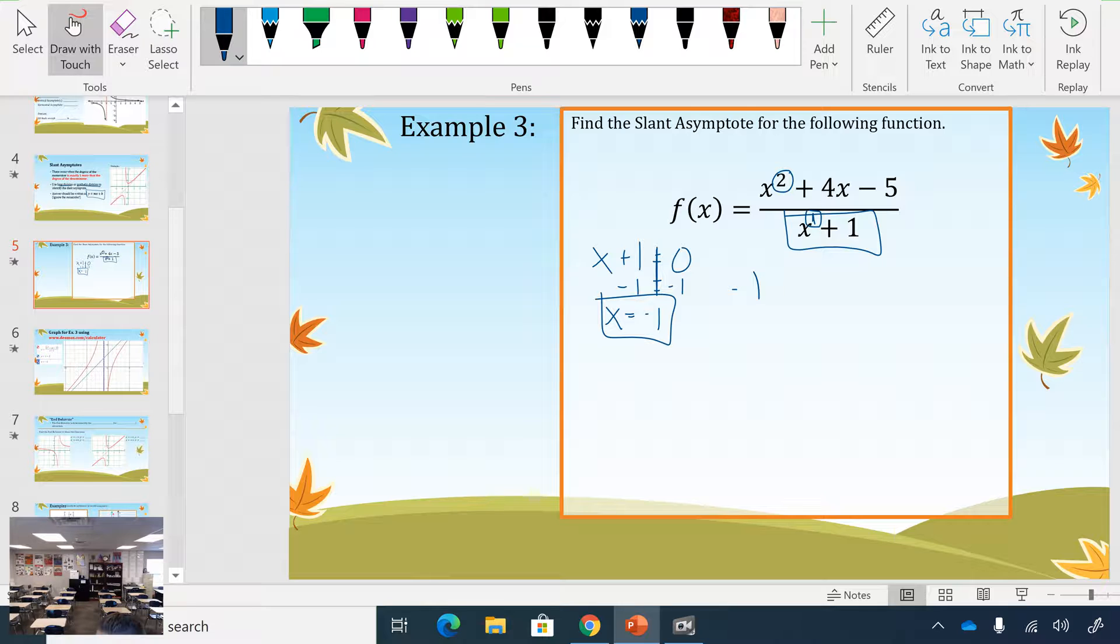And then we need our coefficients so there's a 1, a 4 and a negative 5. So here we go through our steps we bring down we got our 1, multiply 1 times negative 1 so that's going to give us a negative 1, 4 minus 1 is 3, 3 times negative 1 is negative 3, that's negative 8. For this we're not going to need to work with the remainder we're just going to work with our first two in this case.